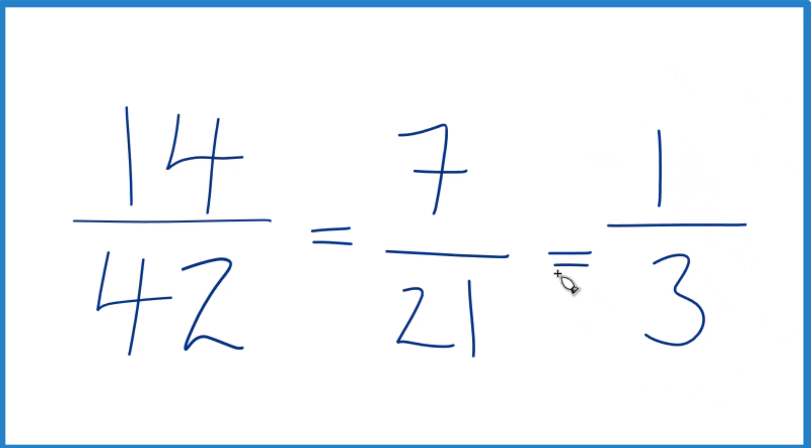And we can't reduce this any further. So it looks like 14 would go into itself and 42 evenly. So you could have started out dividing 14 by 42, that would give you the 1, and then 42 divided by 14, that would give you the 3, if you knew that was the common factor.